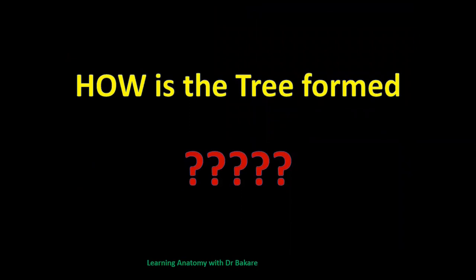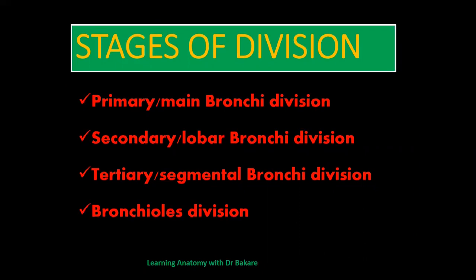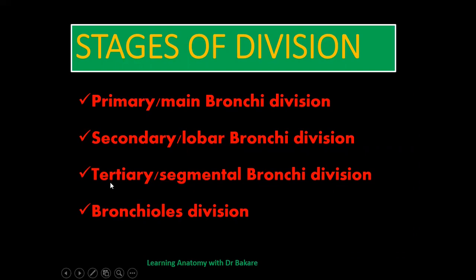How is this tree formed? There are stages of division involved in this division network of the trachea. There are four basic stages: the initial primary stage, also referred to as the main bronchial stage; followed by the secondary stage, also called the lobar division; then the tertiary or segmental bronchial division; and finally the bronchiolar division. Each division is purposely created to feed a particular unit of the lung.